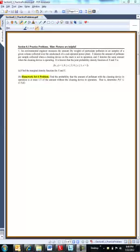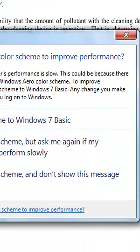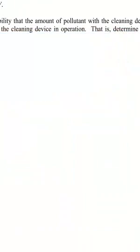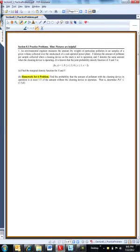Here's the situation: an environmental engineer measures the amount of particulate pollution in air samples of a given volume from a smokestack. X denotes the amount of pollutant per sample collected when a cleaning device is used, and Y is the amount when the cleaning device is operating. So: cleaning device in operation versus cleaning device not in operation.